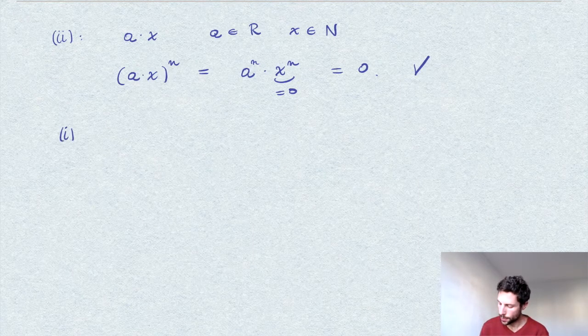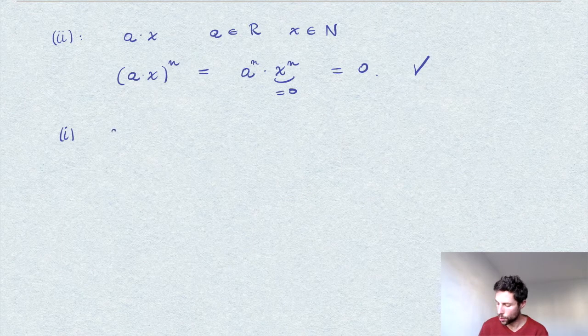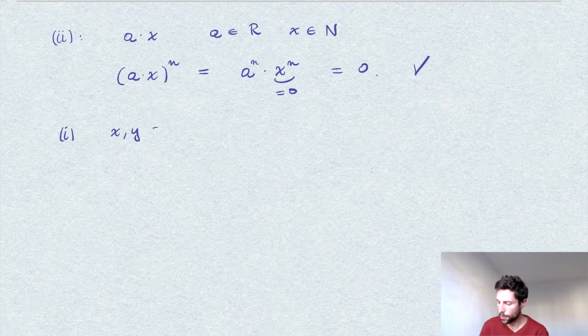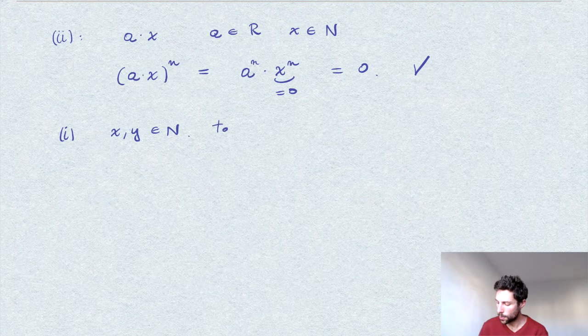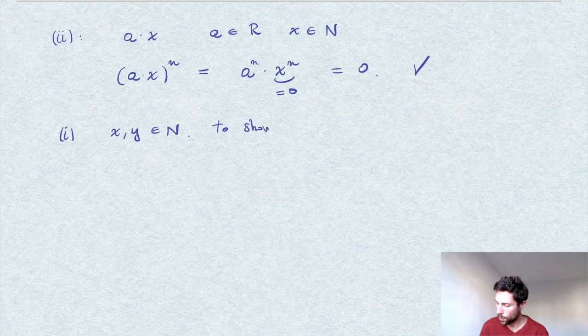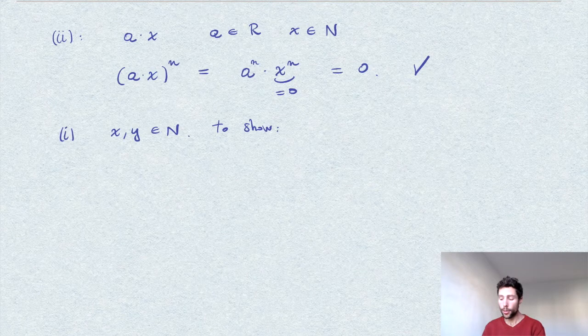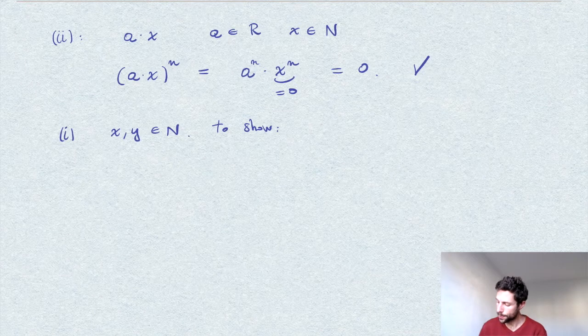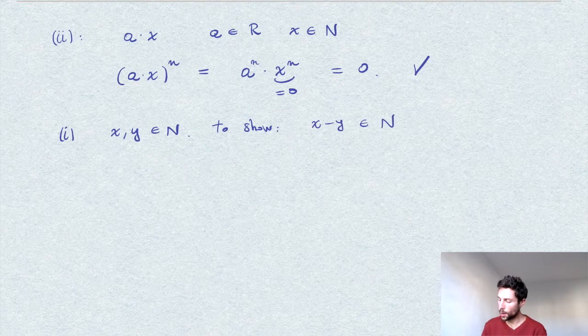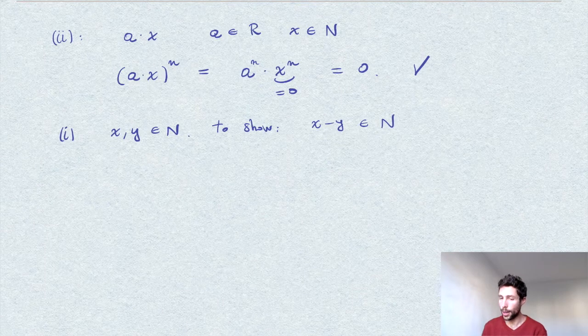For the first part, I take two nilpotents and want to show that their difference is also nilpotent. Therefore N is an additive subgroup. In other words, I have to find some exponent for which this difference is zero.